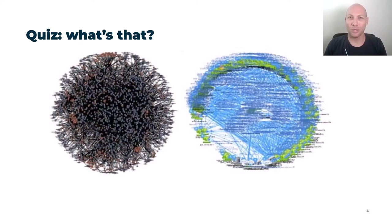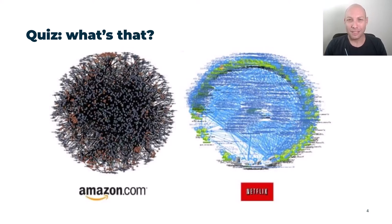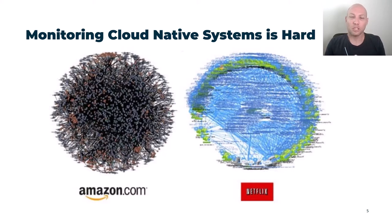Let's start with a quick question. Those are the microservice architecture diagrams for Amazon and Netflix. Now imagine what it would take to monitor something like that. Monitoring cloud native systems is hard because we're talking about highly distributed applications spanning tens and hundreds of nodes, services, and instances — systems that are very dynamic, ephemeral, spinning up and down and scaling in and out.